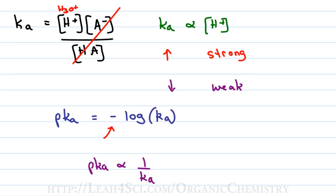Going back to our trend: if we have a high Ka, that means we're going to have a low pKa; and when we have a low Ka, we're going to have a high pKa. In review: a high Ka or low pKa gives you a strong acid, and a low Ka or high pKa gives you a weak acid. This is great if you're given two acids or bases with their Ka or pKa values and asked to compare.